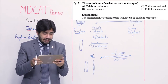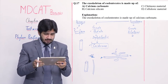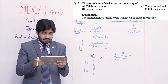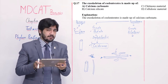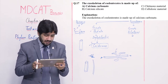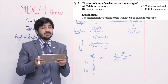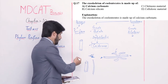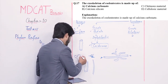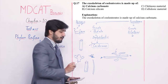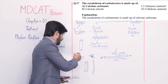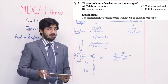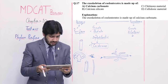Question number 17: the exoskeleton of Cnidarians is made up of — alpha calcium carbonate, beta calcium silicate, charlie cutaneous material, or delta cellulosic material. Nidarians exist in different forms — one form is polyp, which is non-motile. The non-motile polyp secretes its skeleton on the outside, and its chemical nature is calcium carbonate. Right option is alpha.